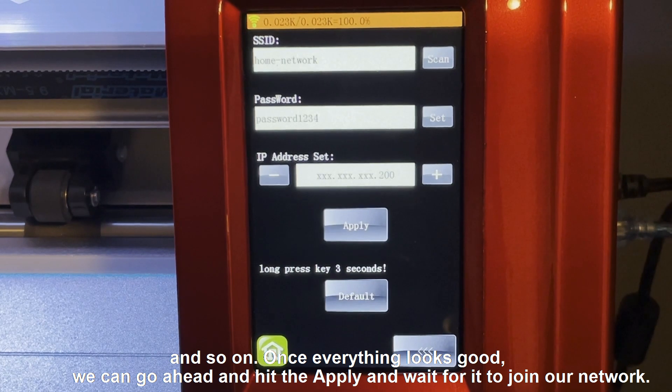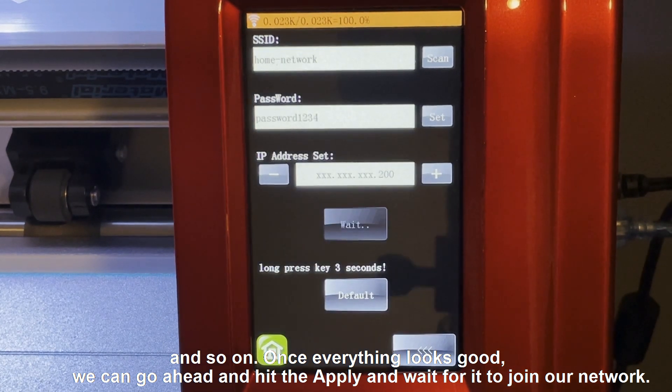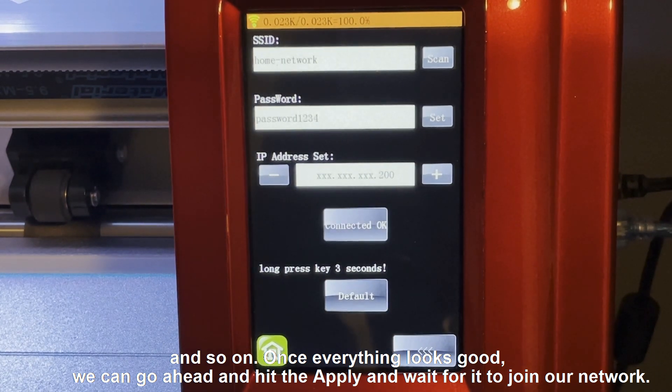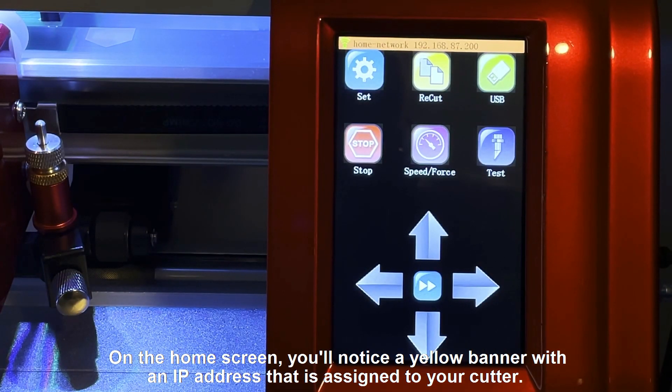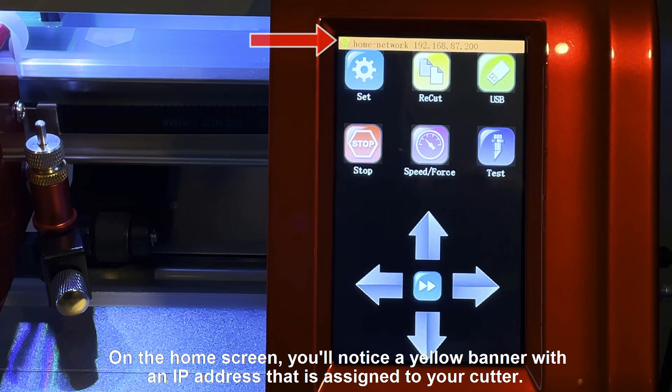Once everything looks good, we can go ahead and hit the Apply and wait for it to join our network. On the home screen, you'll notice a yellow banner with an IP address that is assigned to your cutter.